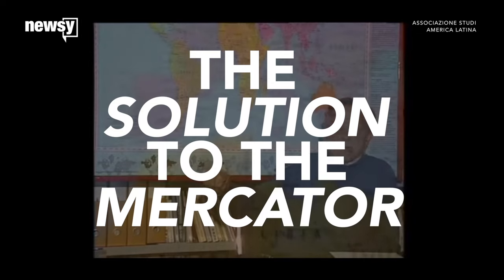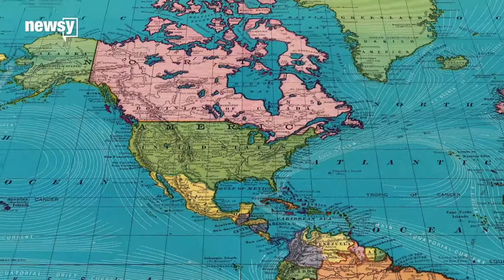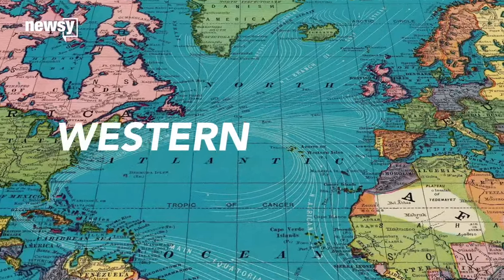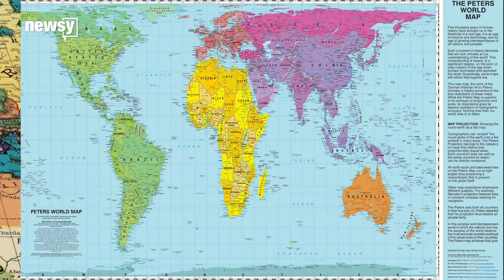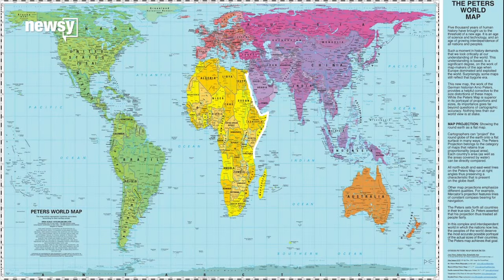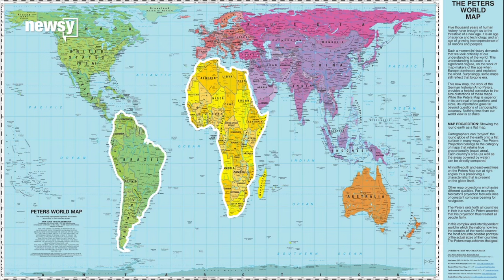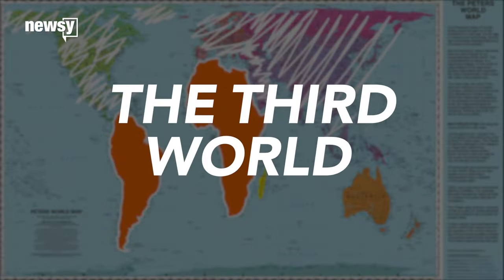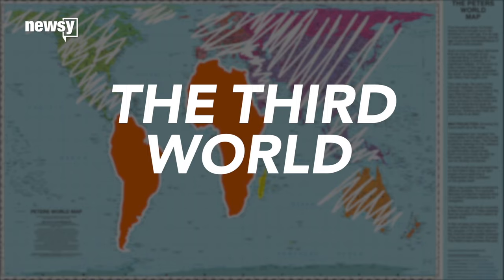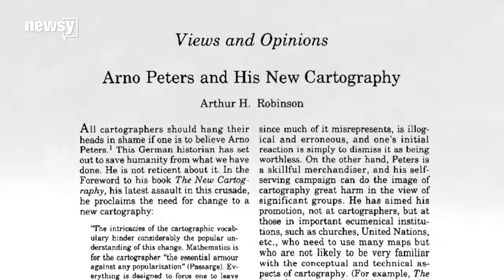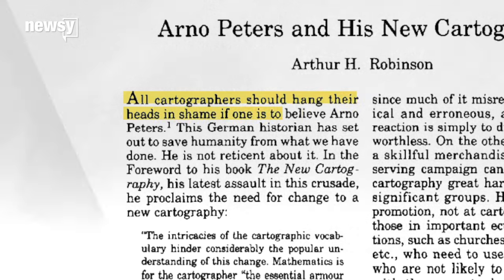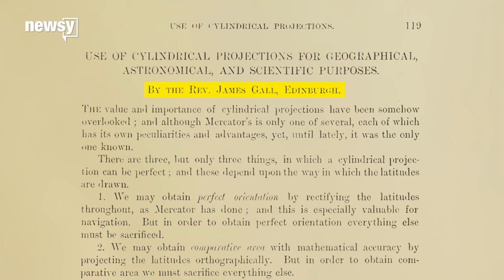Eventually, a German historian created what he said was a revolutionary map projection that he marketed as the solution to the Mercator. For Arno Peters, the Mercator represented Western imperialism. His new projection, with a more prominent Africa and South America, was meant to emphasize what he called the Third World. Reactions ranged from cautious amusement to outright hostility. Peters had trashed the cartographic community in writings promoting his map, and his version really wasn't even that original.